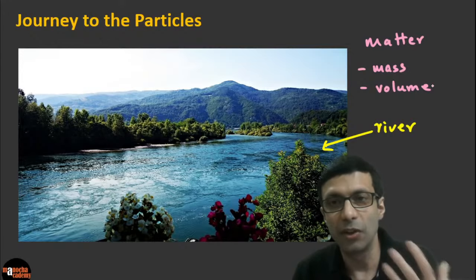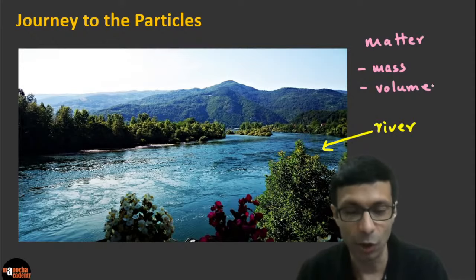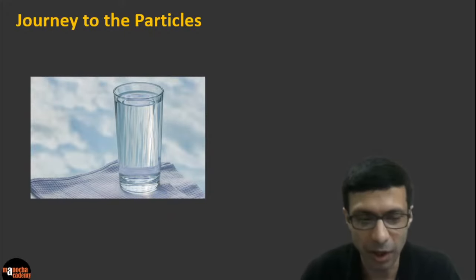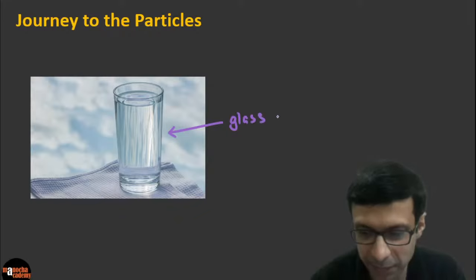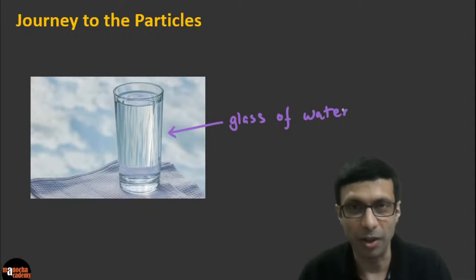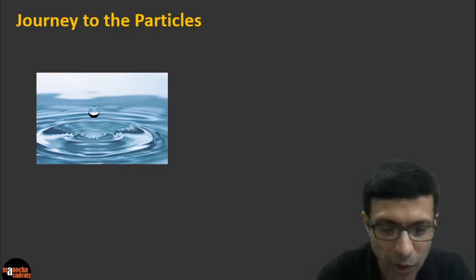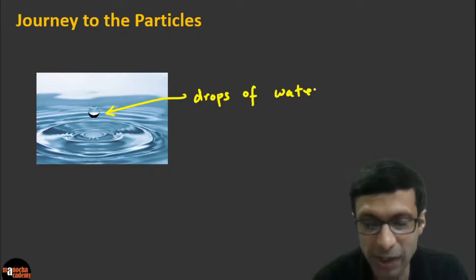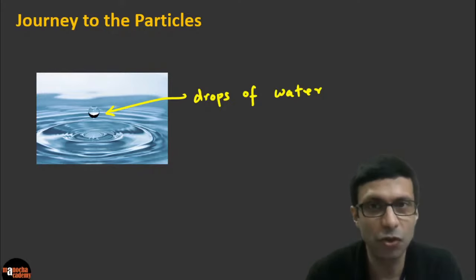Let's take this example of the river. River is matter. Now we want to analyze what the river is made up of. If you look at this large river, we can fill up the water into a glass. So here we have just a glass of water. From the river, we've come down to a simple glass of water. Can we go smaller? Definitely. What is water made up of? Small drops. So if you look at water, there are small drops of water. We are zooming into matter, going closer and closer. Here you can see the drops of water.